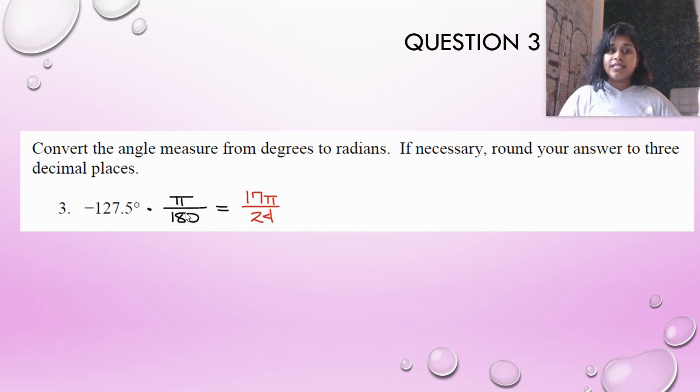get rid of the degrees, and I simplify because 127.5 over 180 simplifies down to 17π over 24. Or I could have left it as 127.5 over 180, but it's smarter to simplify. Let's do it the other way around. So we did degrees to radians. Now let's do radians to degrees.